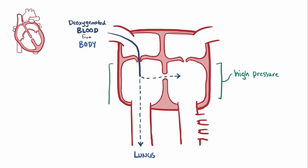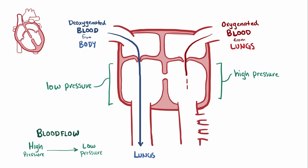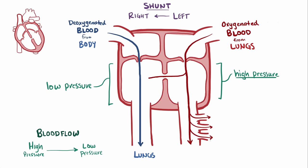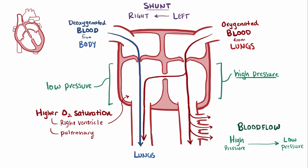Since the pressure on the left side of the heart is actually higher than on the right, and blood likes to flow from high pressure to low pressure, it actually prefers to just keep going on to the lungs. When oxygenated blood comes back from the lungs to the left atrium and then the left ventricle, some of the blood flows over to the lower pressure right ventricle — so a left-to-right shunt has been set up, where oxygenated blood takes an extra trip to the lungs. This means patients will have increased oxygen saturation in the right ventricle and pulmonary artery.